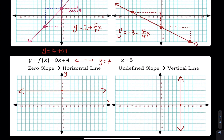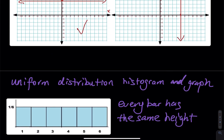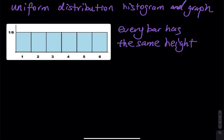In the next lesson — uniform distribution — we will need the horizontal line a lot. Uniform distribution was mentioned when we first discussed what a distribution is. For a uniform distribution, this histogram shows that every single bar has the same height. But in a continuous random variable, we handle it differently.